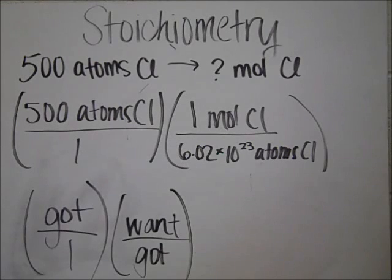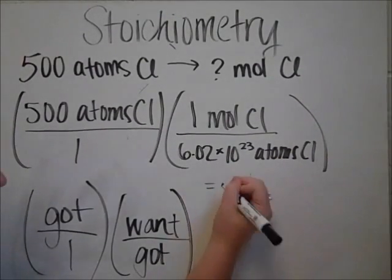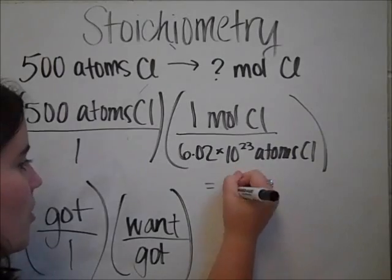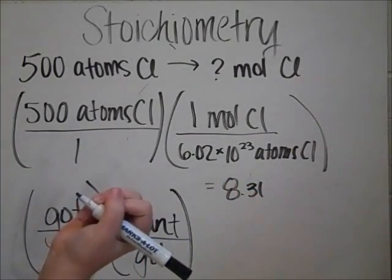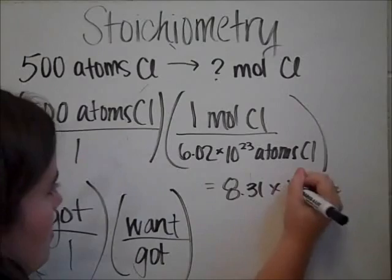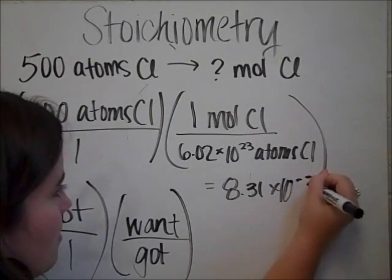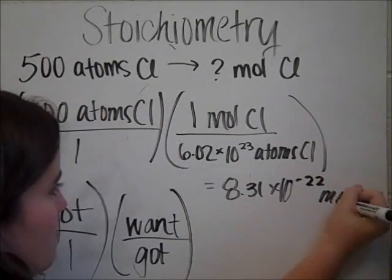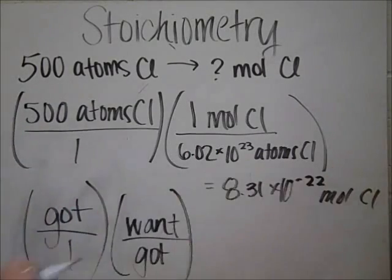Avogadro's number basically is just a number. It's kind of like a ton. For example, if you wanted a mole of eggs, you'd have to have 6.02 times 10 to the 23rd eggs to make up a mole. So it's just another number like any other one. And then when you figure this all out on your calculator, you figure out that it equals 8.31 times 10 to the negative 22nd moles of chlorine. And that was your first example.